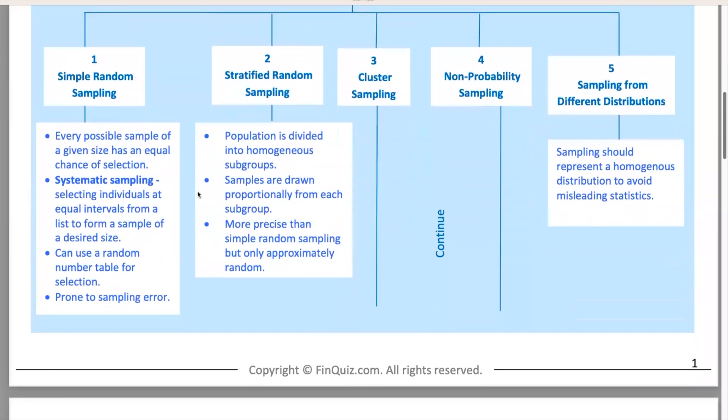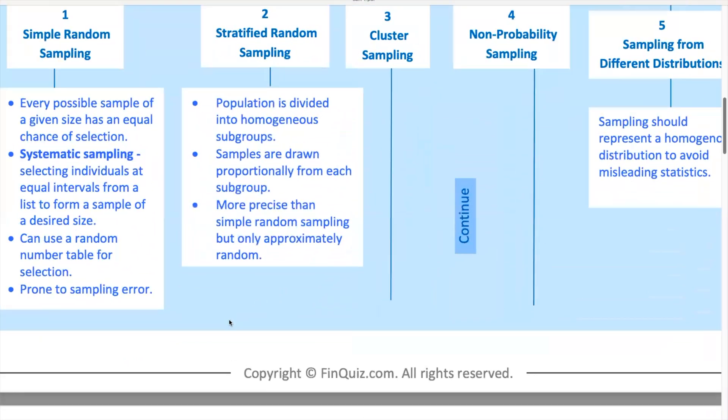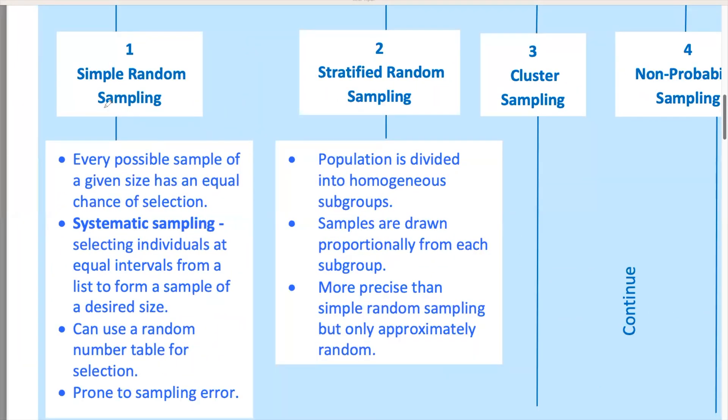Let's break these down. Simple random sampling is exactly what it sounds like. Everyone has an equal chance of being picked. Think of it as the lottery. To do this, you might use a random numbers table. Say your population has 500 members. You'd number them from 1 to 500 and then use random numbers to pick your sample. Easy peasy. This method is straightforward and ensures each member of the population is equally likely to be included in the sample.